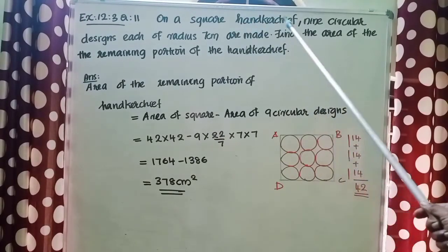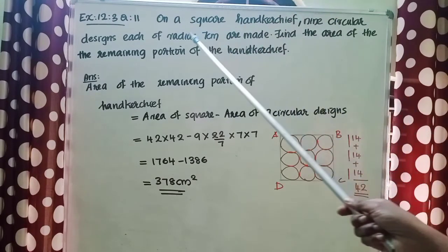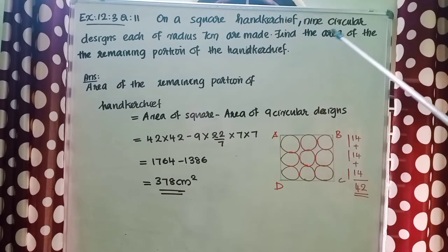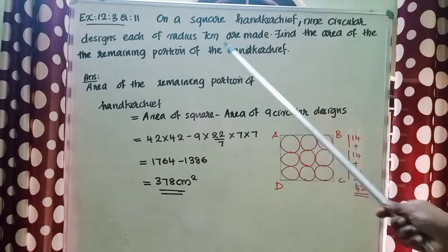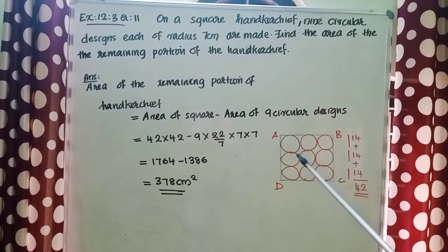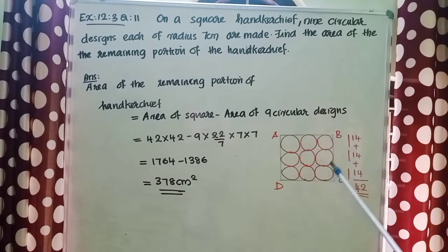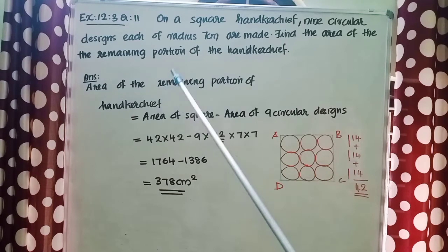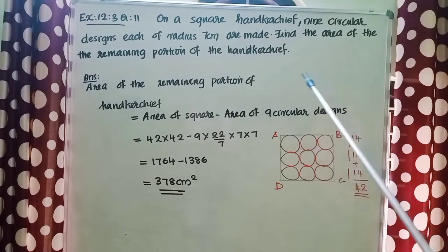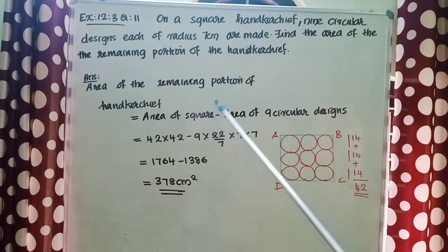On a square handkerchief, nine circular designs each of radius 7 cm are made. Find the area of the remaining portion of the handkerchief. Here is the given figure — there is a square ABCD with nine circular designs. We need to find out the area of the remaining portion. To find it, we need to subtract the area of the nine circular designs from the area of the square.